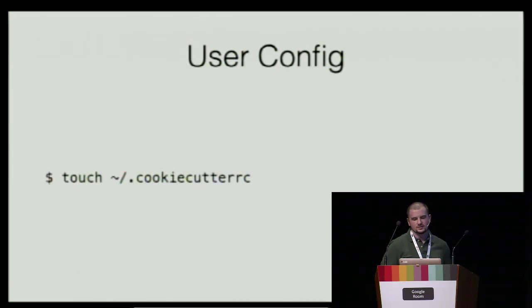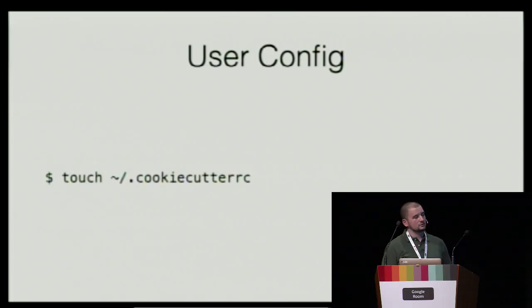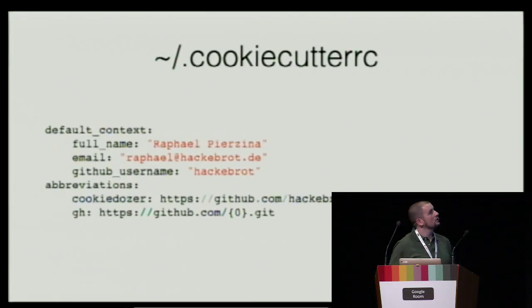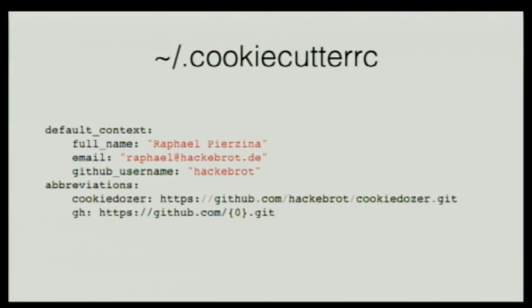Another feature of Cookiecutter is user configuration. In your home directory you can have a .cookiecutterrc file. When you use Cookiecutter frequently, you don't want to enter the same values over and over again — so I can pre-specify my name, email, and GitHub username. It also features abbreviations, so you don't need to type the full template URL. For example, cookiedozer is one of my templates that uses Buildozer to build the APK for Android, and I just have an abbreviation for that. You can also abbreviate GitHub repository paths.